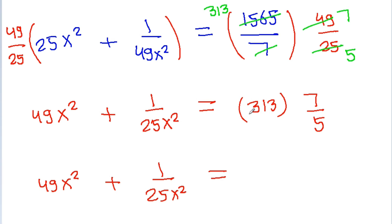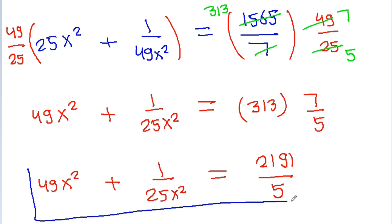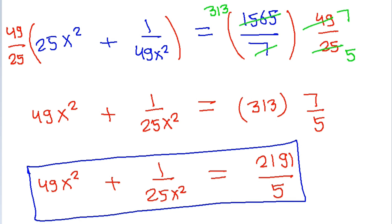So 49x square plus 1 by 25x square is equal to 313 into 7, which will be 2191 by 5. The required value is 2191 by 5.